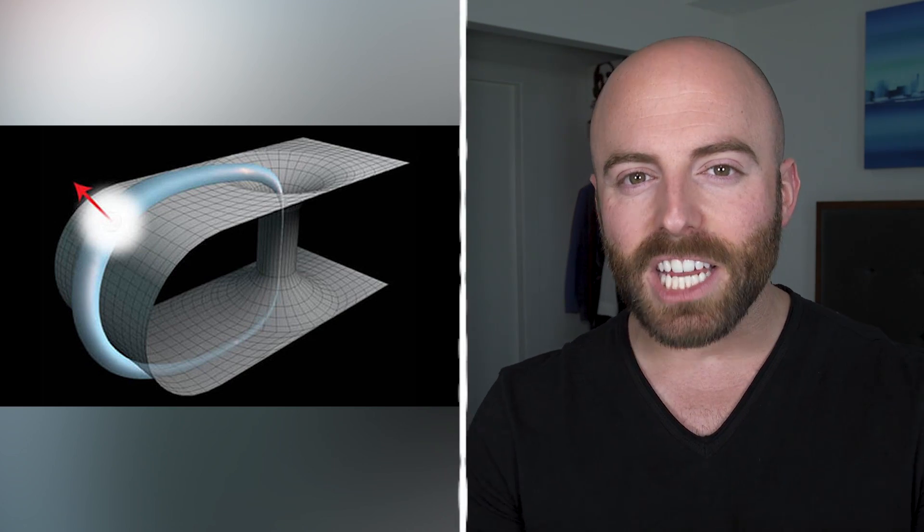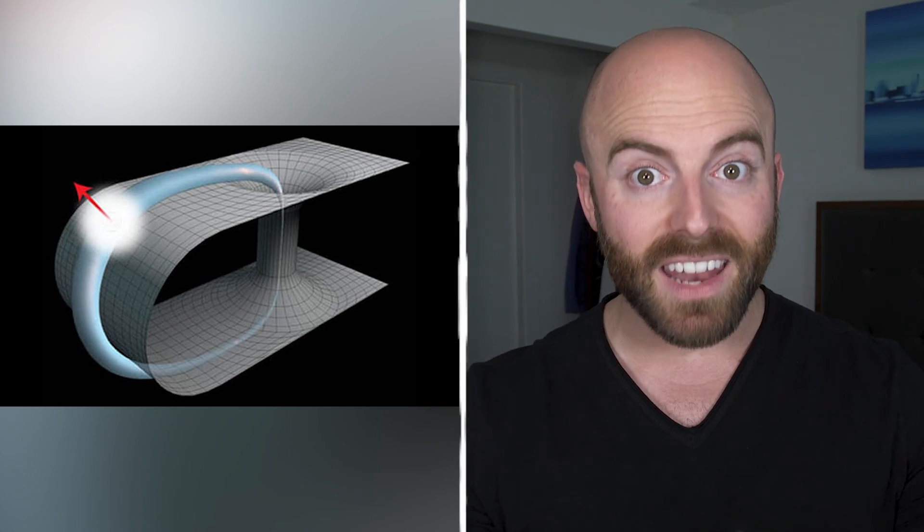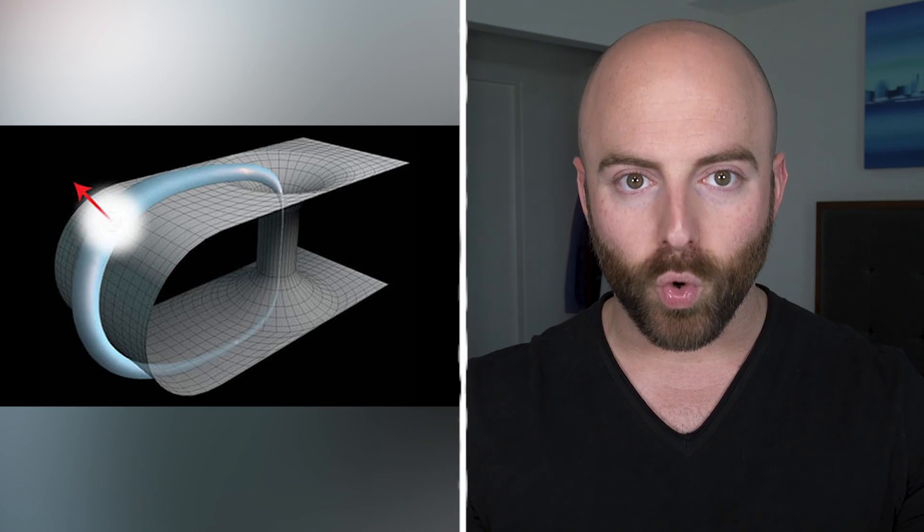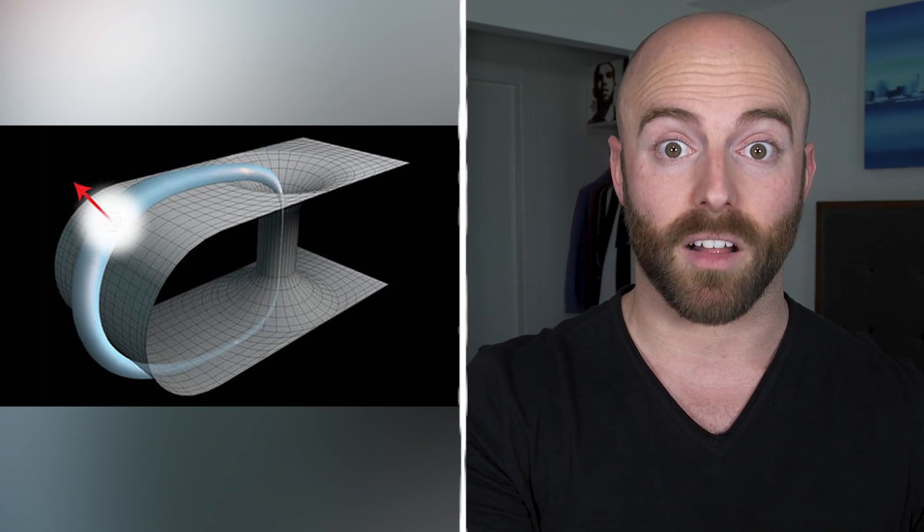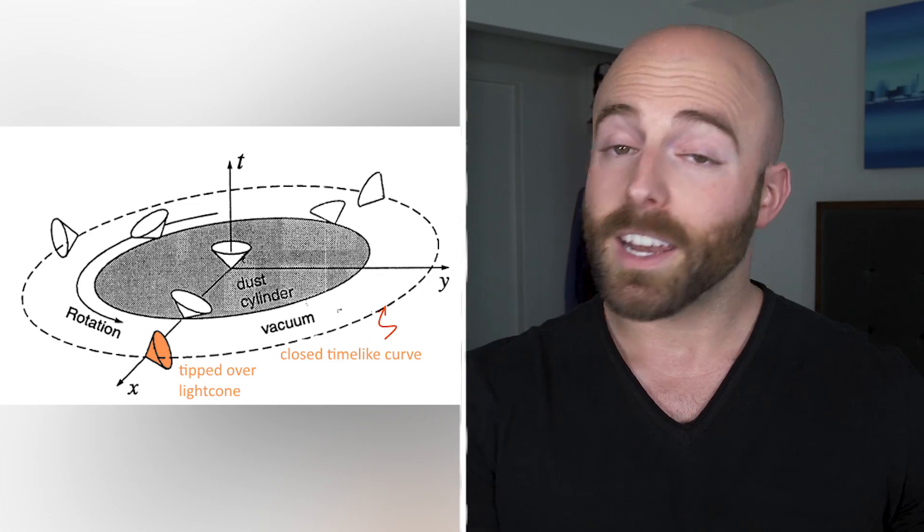But inside a black hole, the gravitational field could actually bend this line so that a person's world line would loop back on itself. Wait a minute.